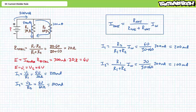If the DC Current Divider Rule seems too easy, rest assured there are ample opportunities to screw it up. First, stay organized. Which resistor are you interested in? Which resistor are you not interested in? Pick one and remember which one you picked. You'll note the choice of the resistor of interest only affects the numerator, i.e. the top portion of the ratio. The rest of the formula remains the same for both resistors. Additionally, realize the summation of the two resistors in the denominator needs to be enclosed in parentheses if you try to enter this formula in your calculator in one go.